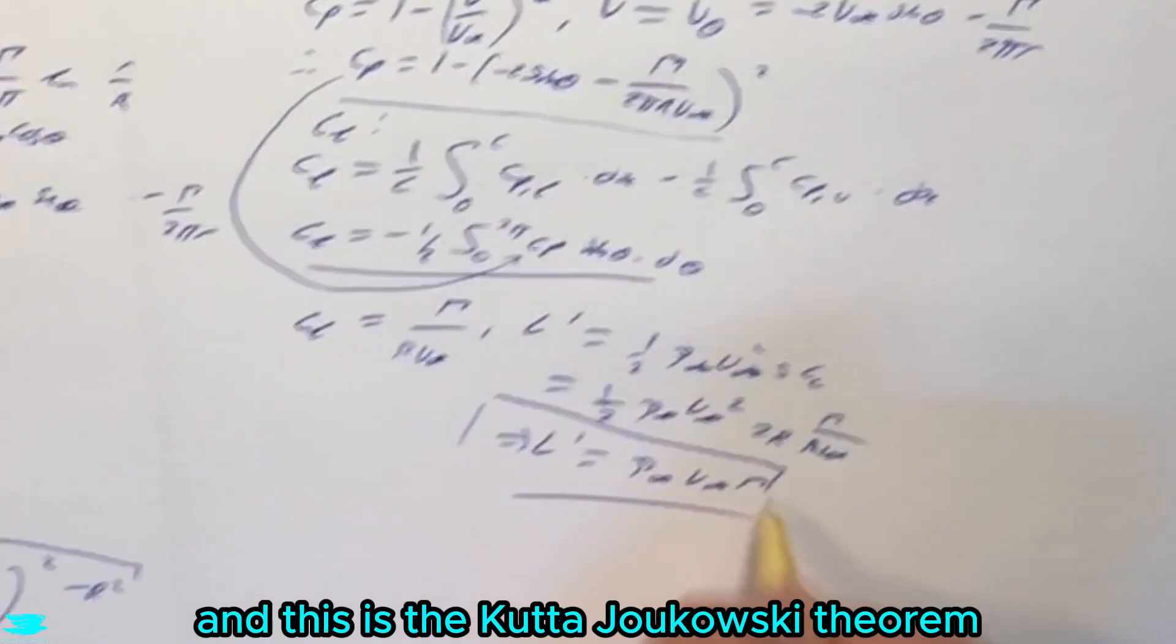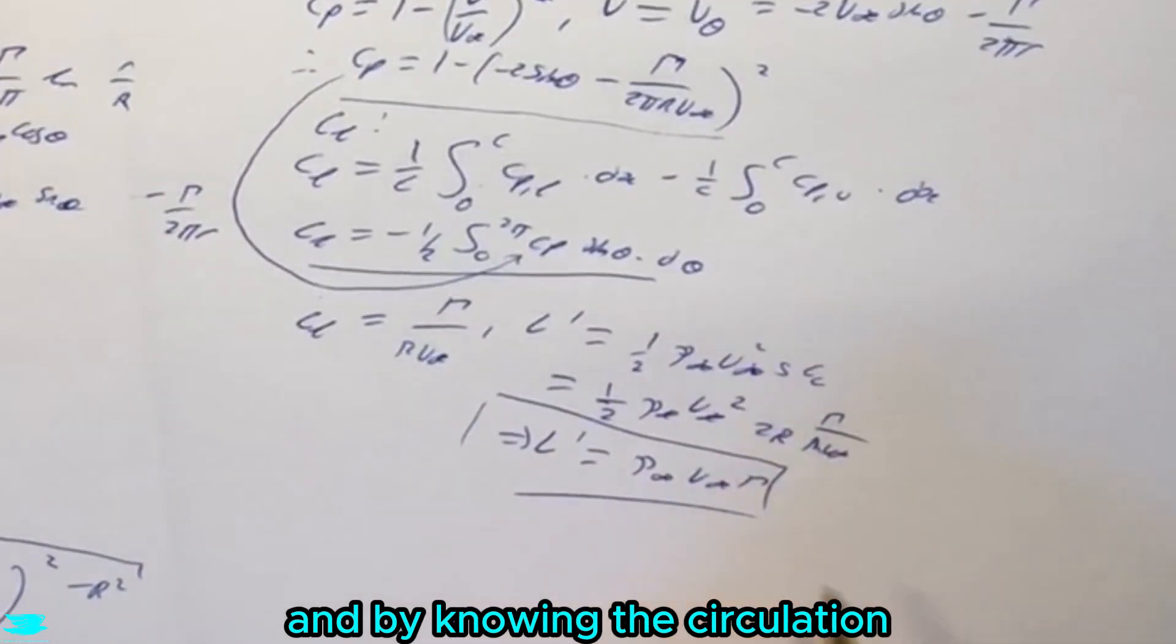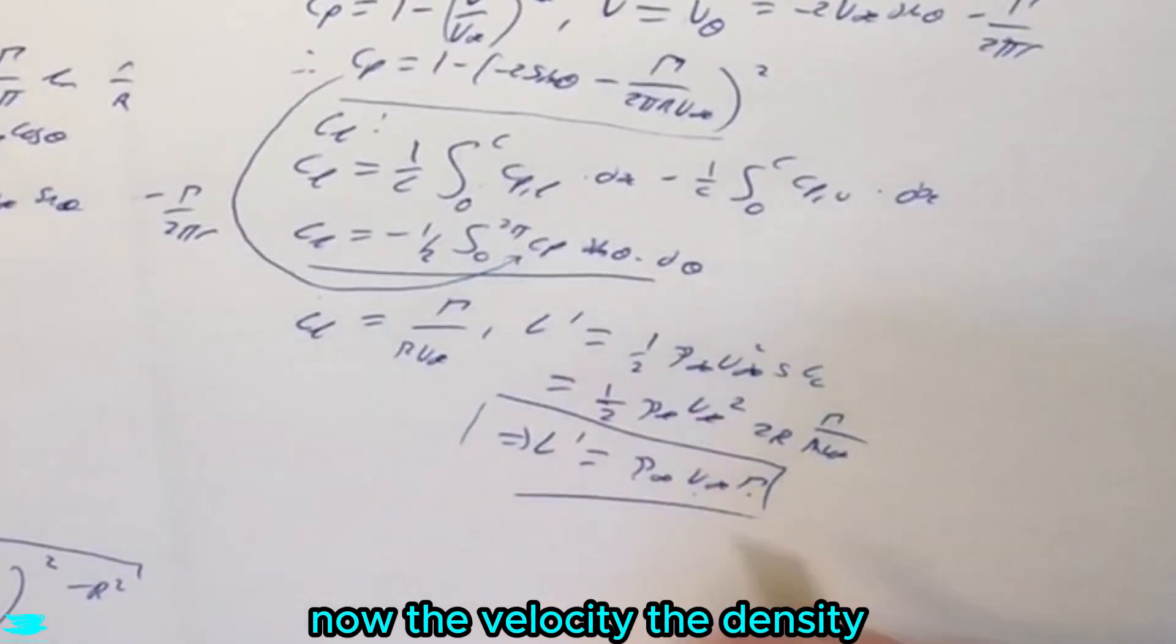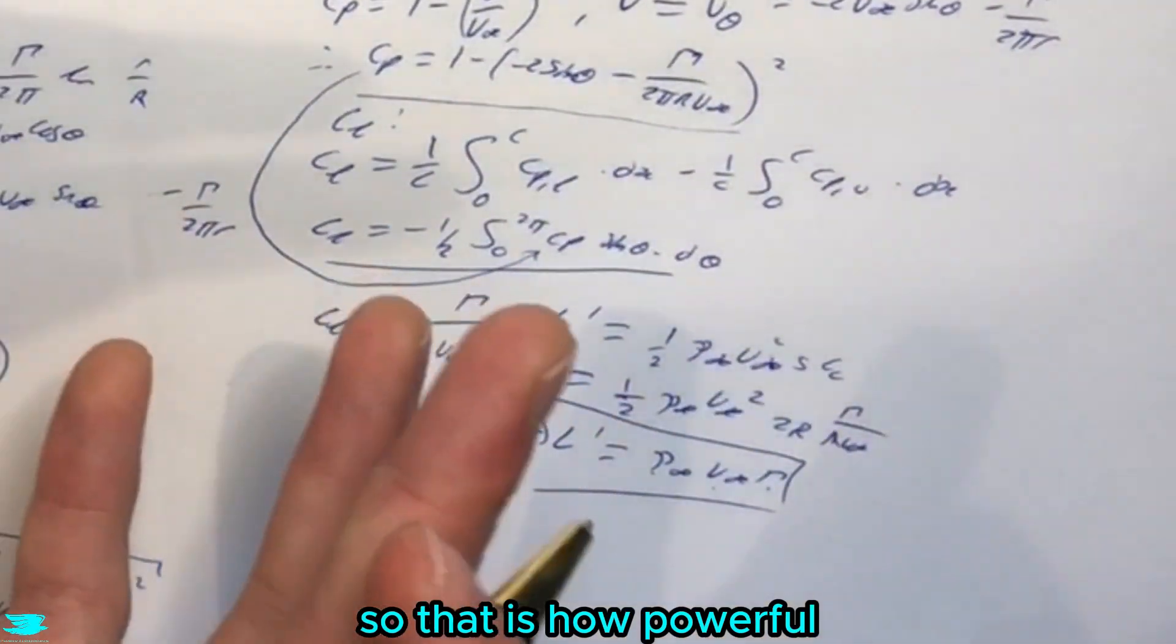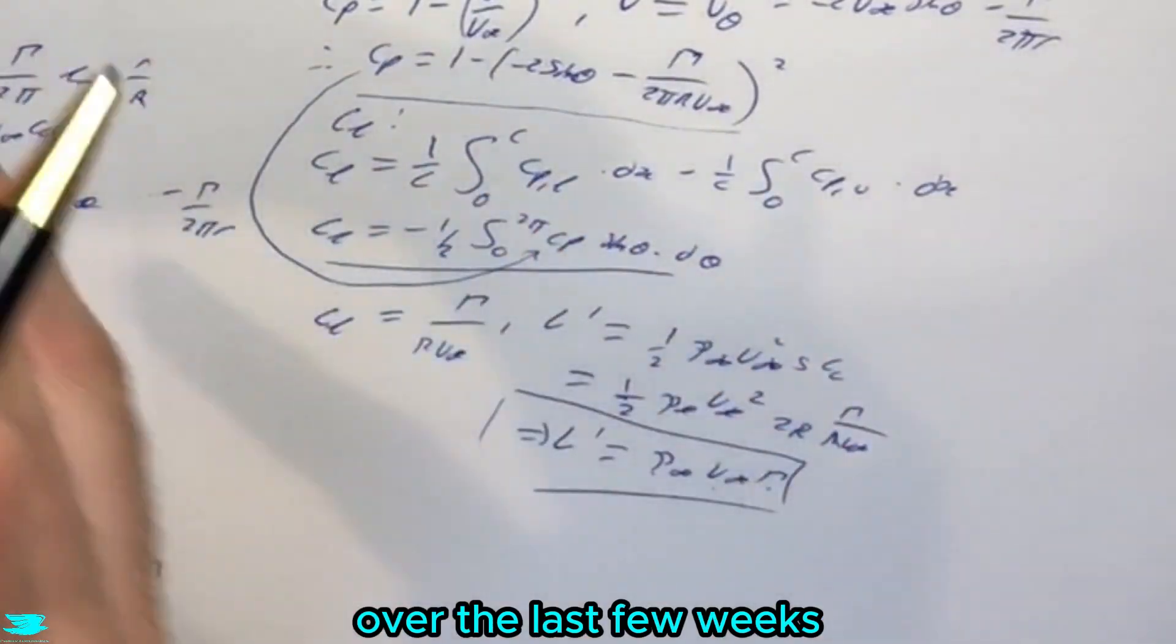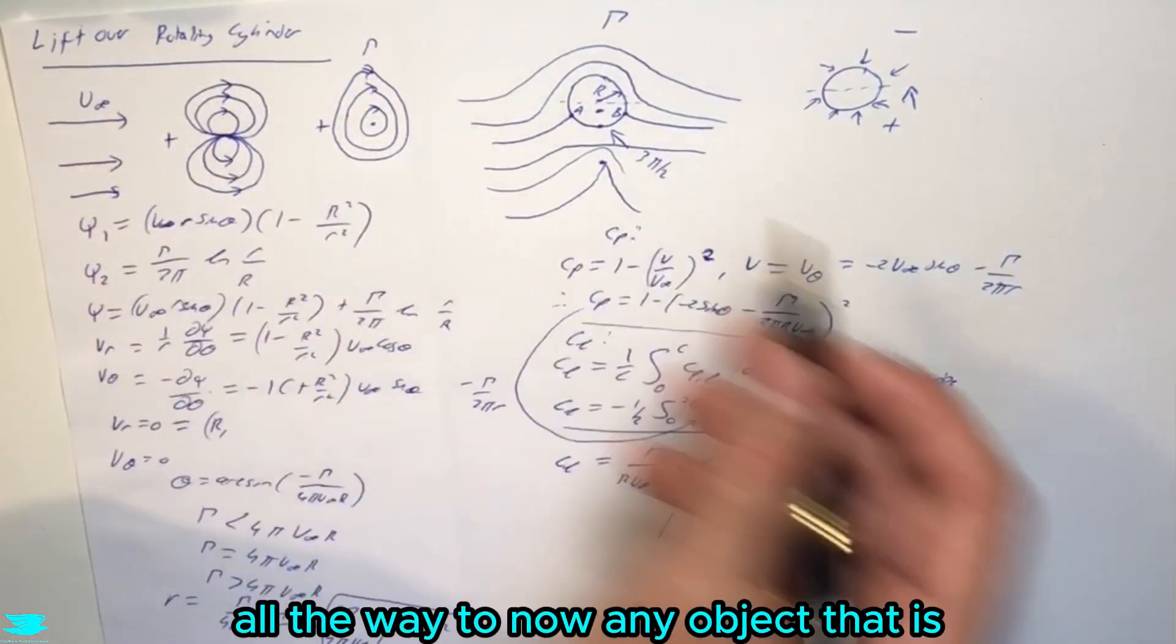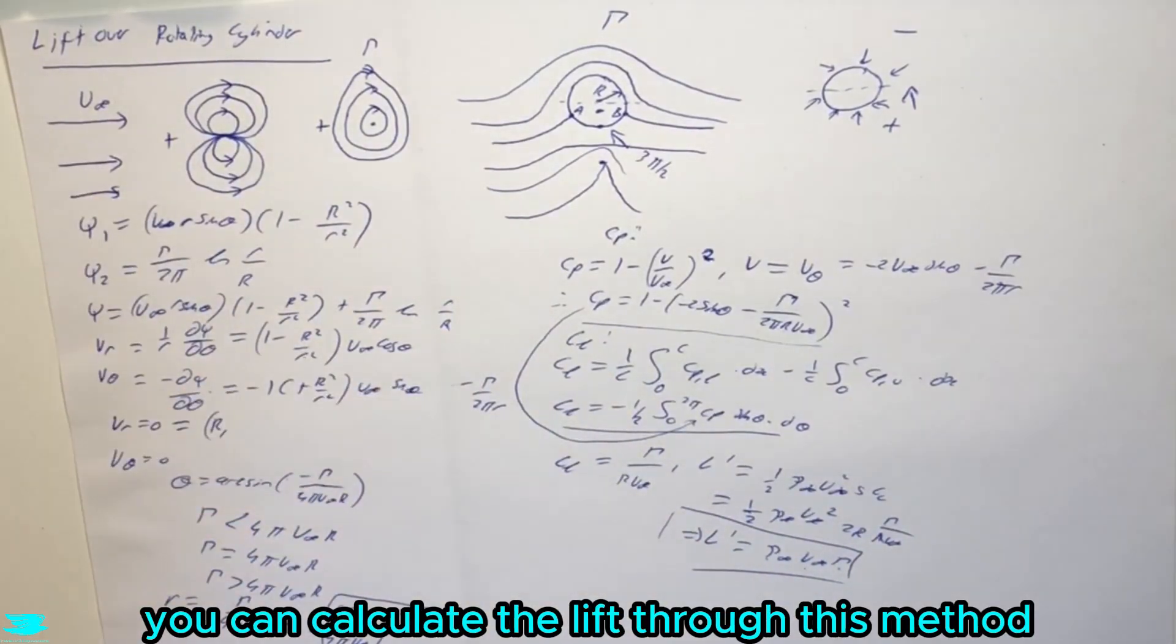And this is the Kutta-Joukowski theorem, which we've gone through in this video. And by knowing the circulation around any object, you can literally just plug that value into here, know the velocity, the density, figure out what the lift per unit's length is. So that is how powerful this has been built up to, over the last few weeks, going from literally just a uniform flow, all the way to now any object that has some circulation, you can calculate the lift through this method.